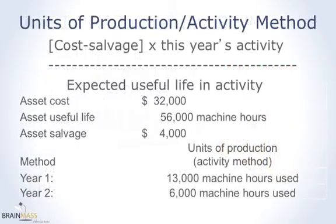The calculation is: cost minus salvage, times this year's activity, divided by the expected useful life in activity. For this asset, cost was $32,000, salvage is $4,000, and we expect this piece of equipment to last for 56,000 machine hours, after which we expect to sell it for that salvage value.